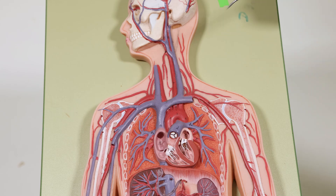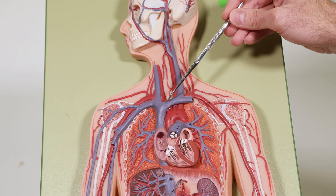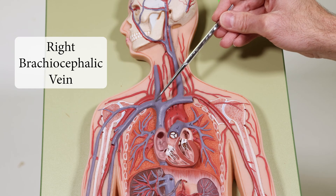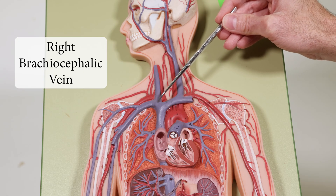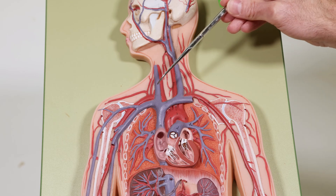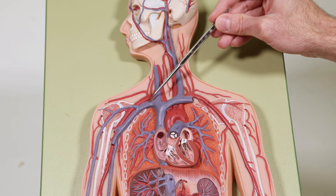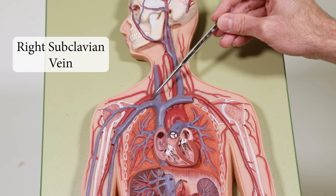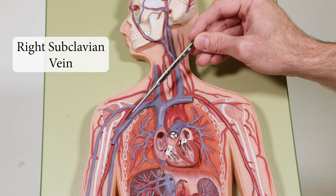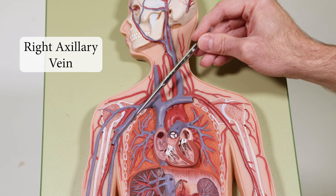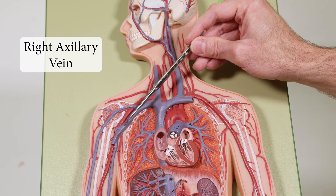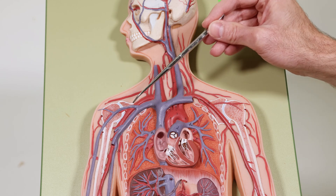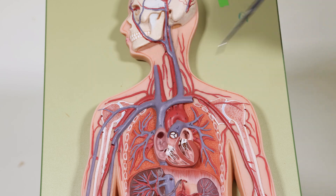On the venous side, the right brachiocephalic vein goes to the right subclavian vein and the right axillary vein. We'll work on repositioning the camera so you can see more of the arm as we go down.